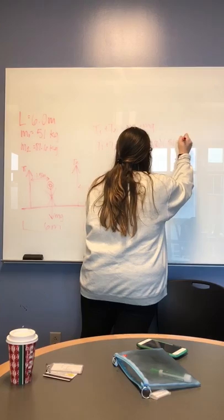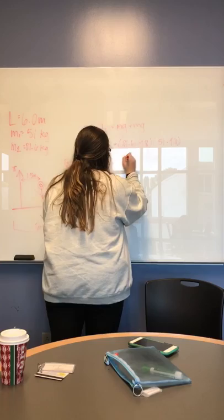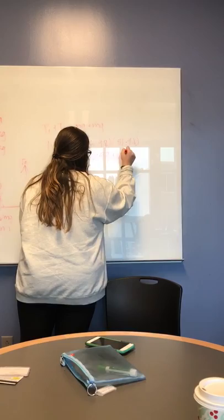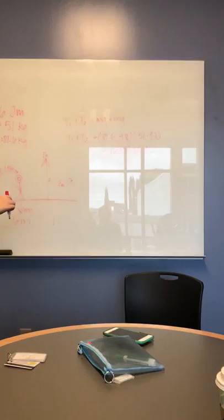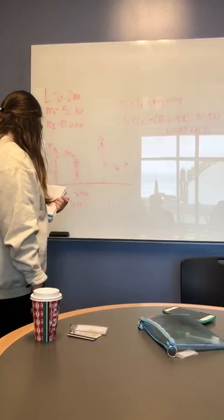The net torque is zero because it's in equilibrium. The pivot point is over here, and so t2 is going to equal 51 times 9.8 times 3, plus 81.6 times 9.8 times 1.5, because those are the distances.